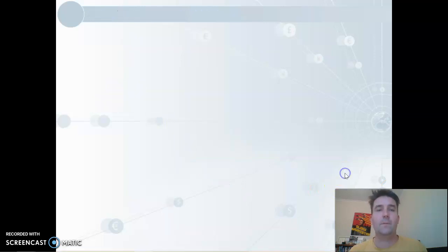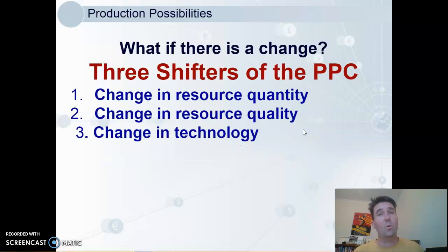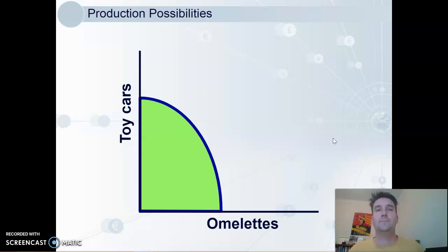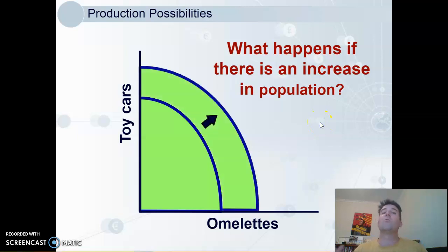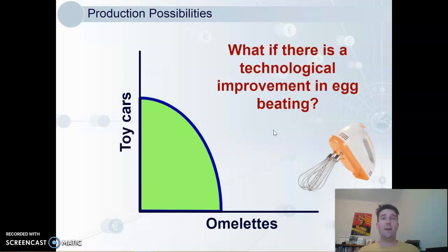Economies are not static — they change, and that's what makes studying economics so much fun. This means we need to look at how changes in the world can change the production possibilities. Three things will shift our production possibilities curve: change in resource quantity, change in resource quality, or change in technology. For example, with cars and omelettes — what happens if there is an increase in population? We can have more cars and omelettes than previously, because we have a greater quantity of resources, so the whole curve shifts outwards and we can make more of both.